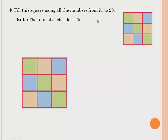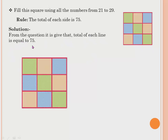Now fill the square using all numbers from 21 to 29. The total of each side is 75. Before, they gave one or two numbers; now no numbers are given. You fill it with numbers 21 to 29, and the total of any line should be 75. You can start with any number — 21, 22, 23 — according to your creativity.